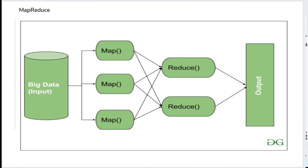In MapReduce, big data inputs are sent to two main functions: the map function and the reducer function. The mapper function is responsible for breaking the entire query into key-value pairs. All these key-value pairs are then sent as input to the reducer function, which performs all the summarizations and aggregations, and finally the results are sent to the output files.